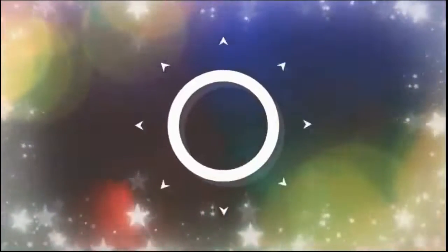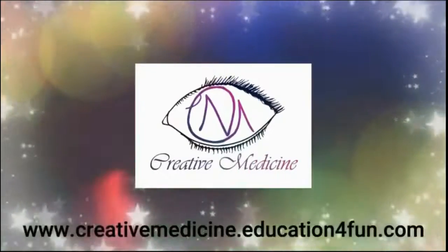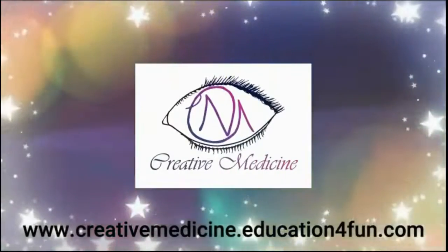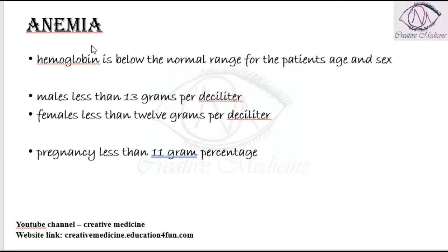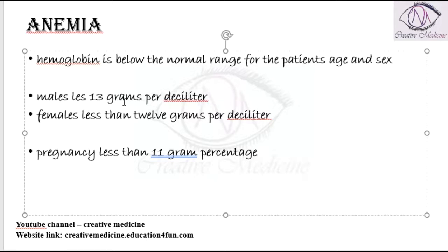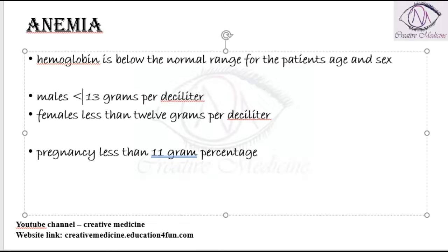Hello friends, welcome to Creative Medicine. In this lecture, we will learn about anemia. A patient is said to have anemia if the hemoglobin is below the normal range for the patient's age and sex.